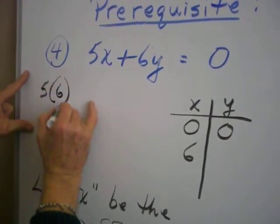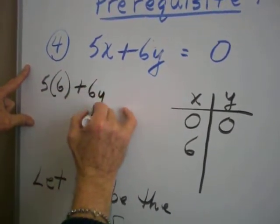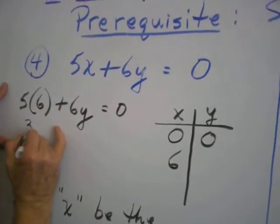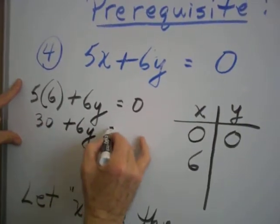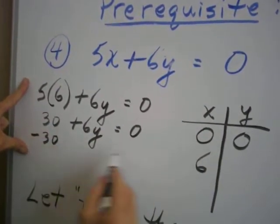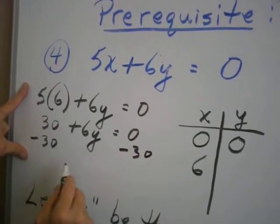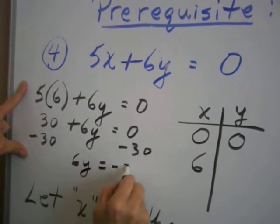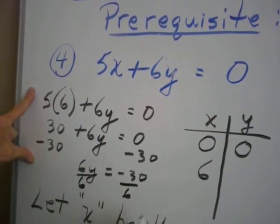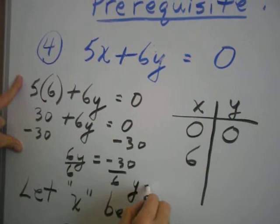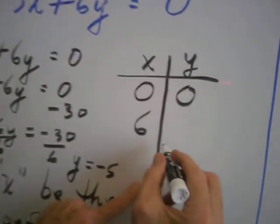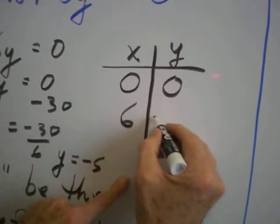5 times 6 plus 6Y is equal to 0. That gives us 30 plus 6Y equals 0, so negative 30 on both sides. 6Y is equal to negative 30, divide both sides by 6, and Y is equal to negative 5.